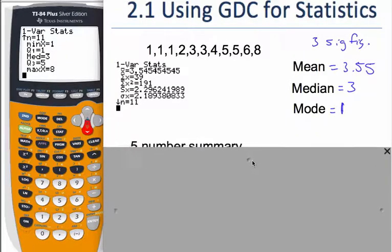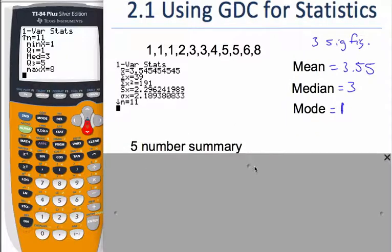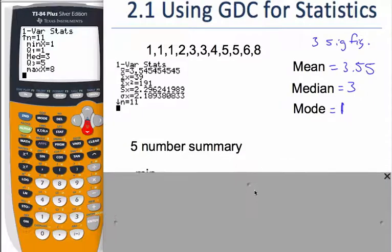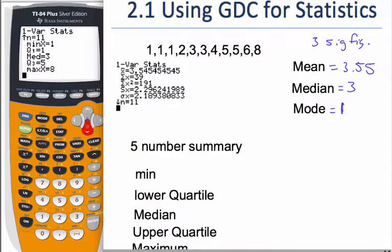So our calculator will find the mean and the median for us. Now there's other things our calculator will do too, and there's this thing called a five number summary. I'm sure you've heard that before. That's really important when it comes to viewing statistical data and looking at the range of the data.